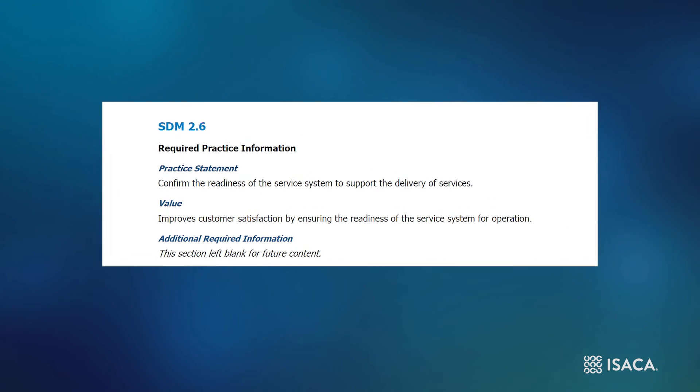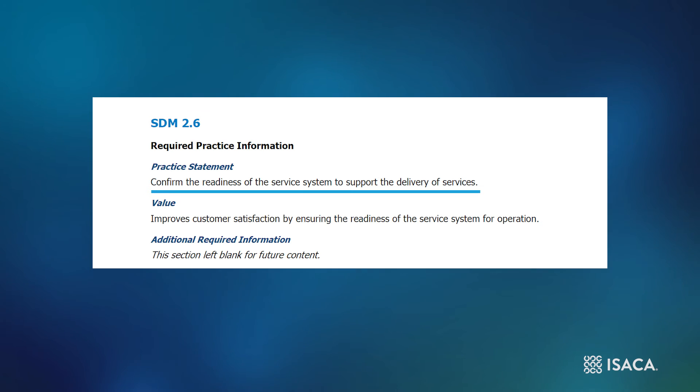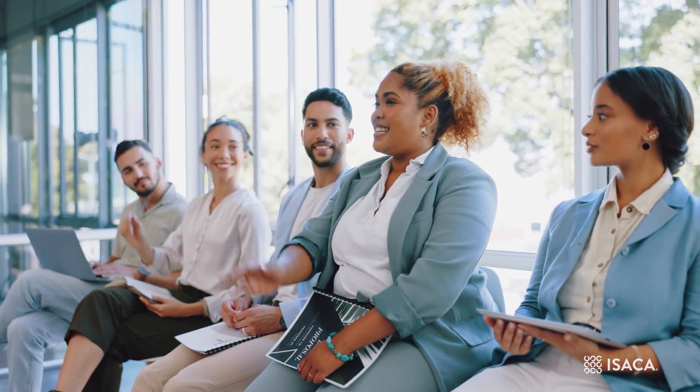The last level two practice is closely related to the previous one. SDM 2.6 calls for organizations to confirm the service system is ready to support service delivery. This is a continuous process, not just restricted to the initial setup of the service system. Every time the service system is modified, organizations need to ensure that the changes will not adversely impact the current service delivery. This may include providing service support staff with additional training to help them respond to service requests and confirming changes to the service system infrastructure were implemented correctly.